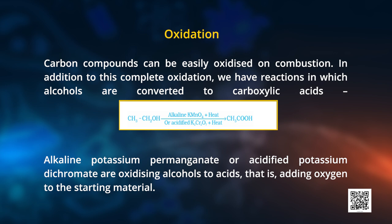Our next reaction is oxidation reaction. Carbon compounds can be easily oxidized on combustion. In addition to complete oxidation, we have reactions in which alcohols are converted to carboxylic acids. Two kinds of reagents are used: first is alkaline potassium permanganate, which is a mixture of potassium permanganate and any alkali such as NaOH; or acidified potassium dichromate, which is a mixture of potassium dichromate and an acid like H₂SO₄.